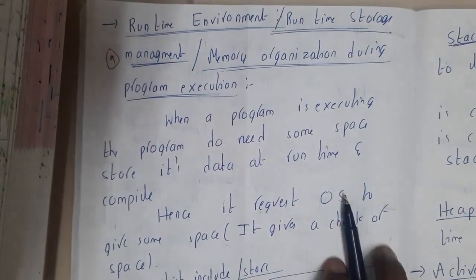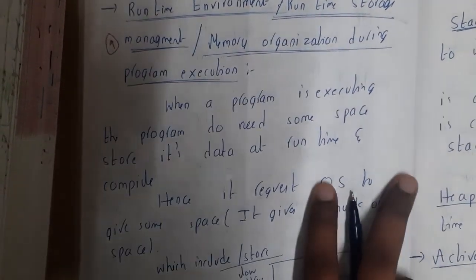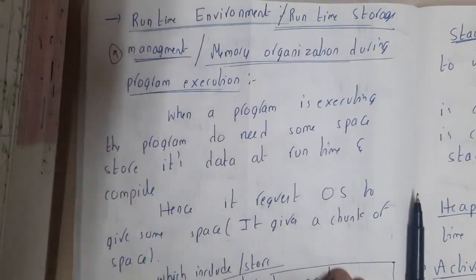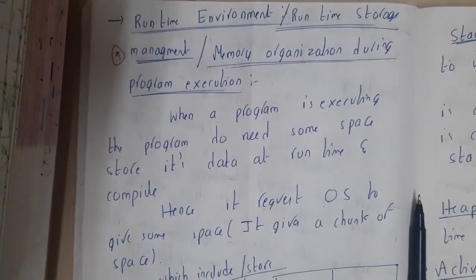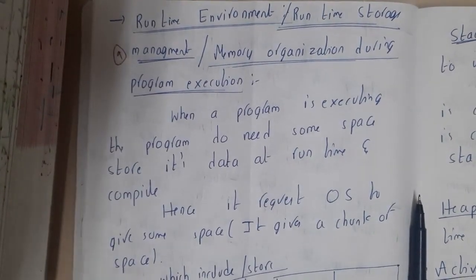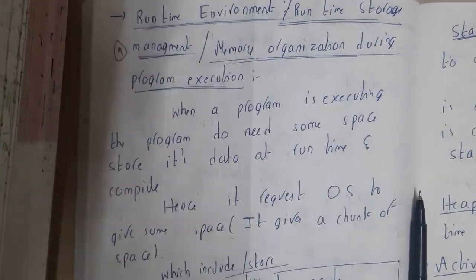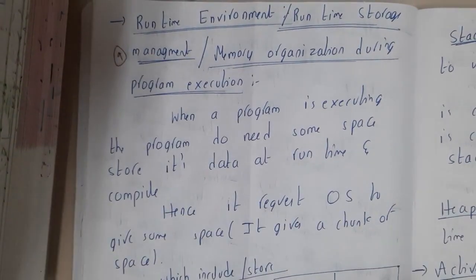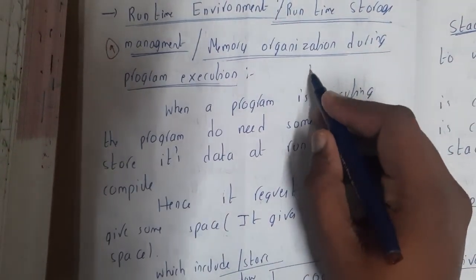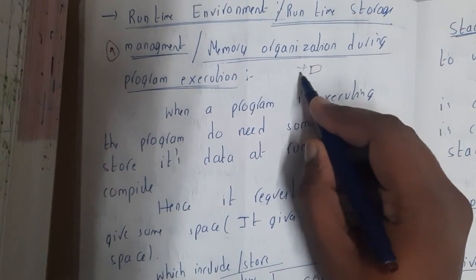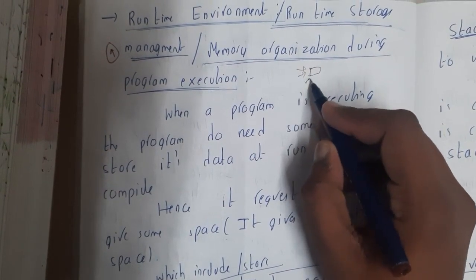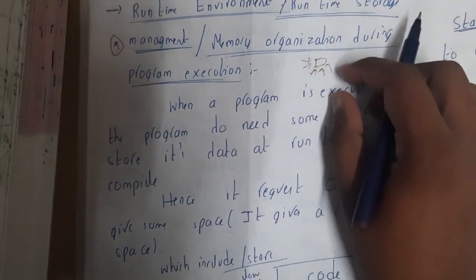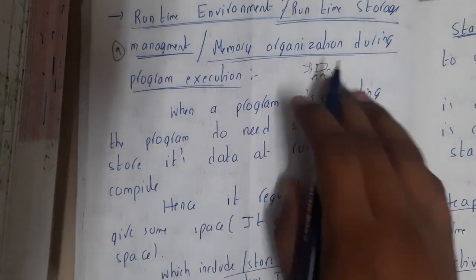Hello, we are back with our next lecture. In this lecture, let us go through runtime environment, or runtime storage management, or memory management during program execution. Basically, whenever a program is being executed, it requires some space to store its variables, registers, and all those things. That storage is allocated by the operating system as per the requirements.